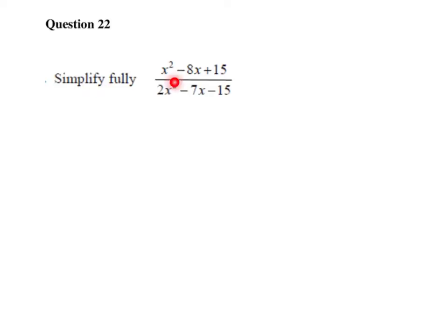So I've got to simplify fully, x squared minus 8x plus 15 over 2x squared minus 7x minus 15. So quadratic equations, they probably both will factorise, so we'll start with x squared minus 8x plus 15.